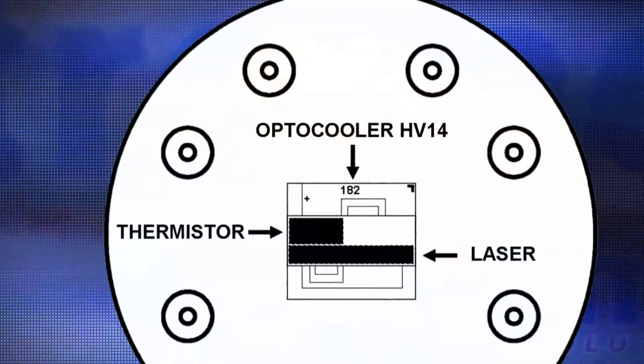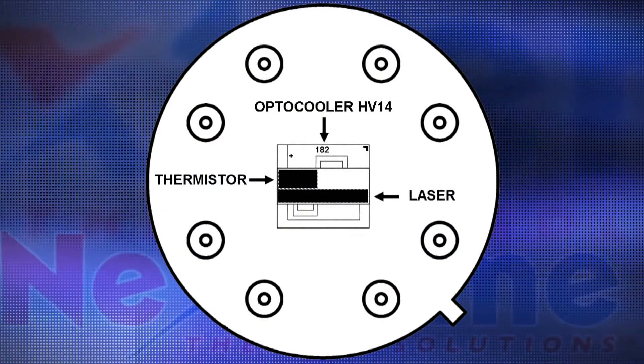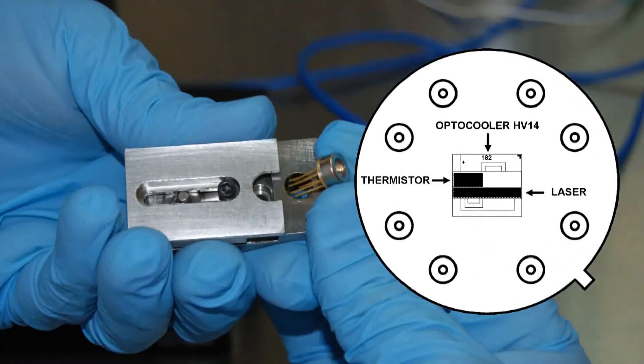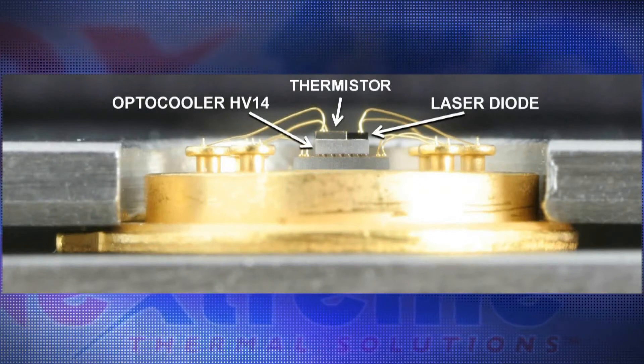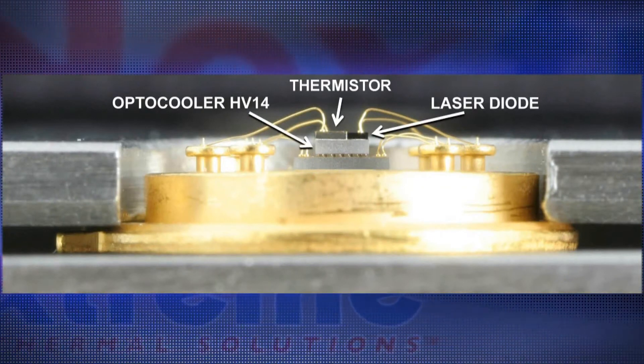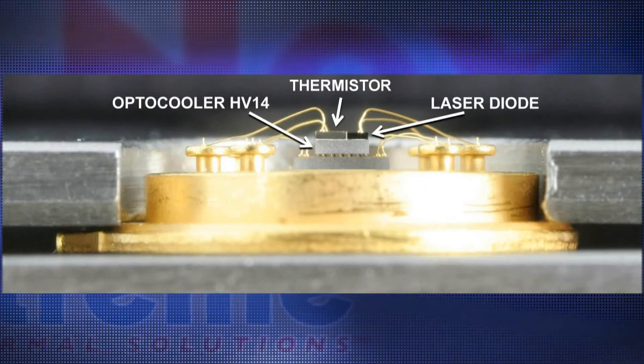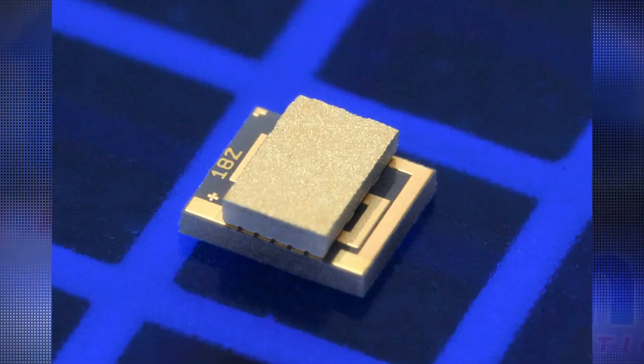To illustrate the benefits of cooling a laser diode with an embedded TEC, we mounted a laser diode on the top of an OptiCooler HV14 thermoelectric cooler in a T08 package. A thermistor was installed to measure the temperature of the diode. At 85 degrees Celsius, the HV14 module can pump 1.7 watts of heat in a footprint of less than 3 square millimeters.